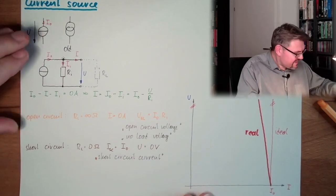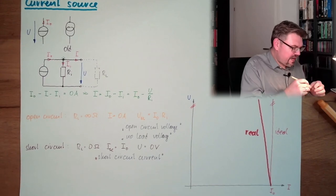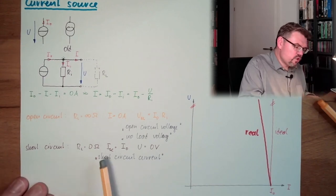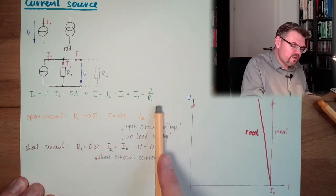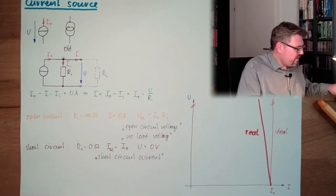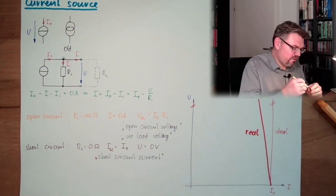So, this time it's vice versa. This time a short circuit will show the values of the source and an open circuit will show the values of the internal resistance.